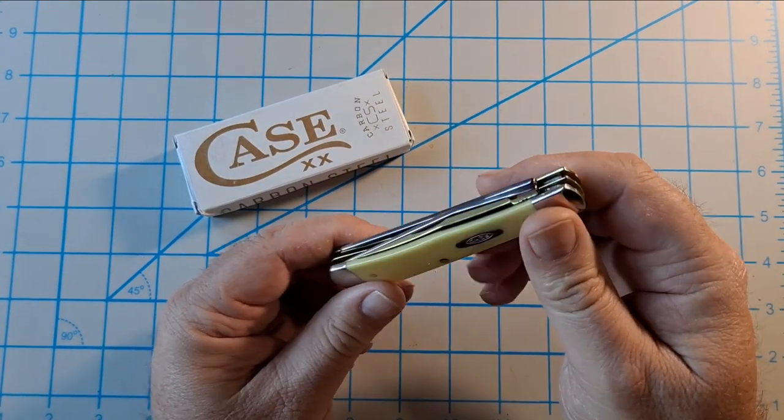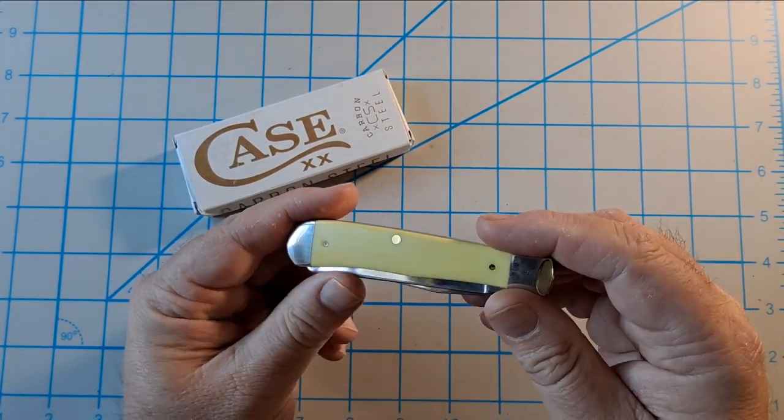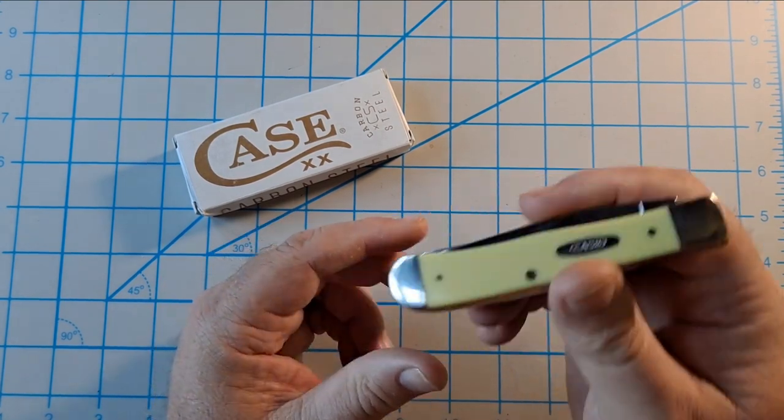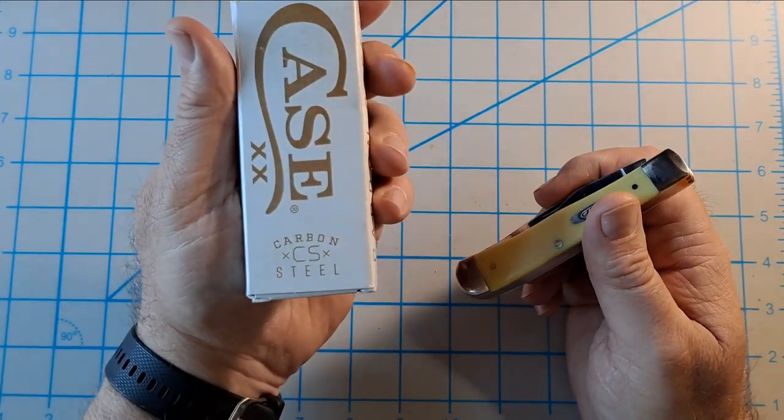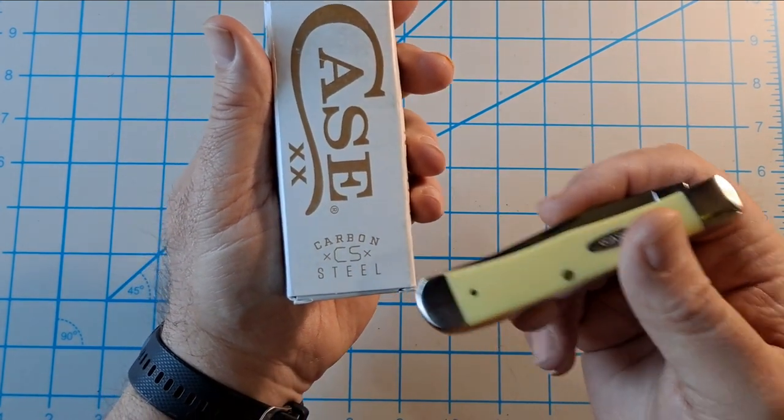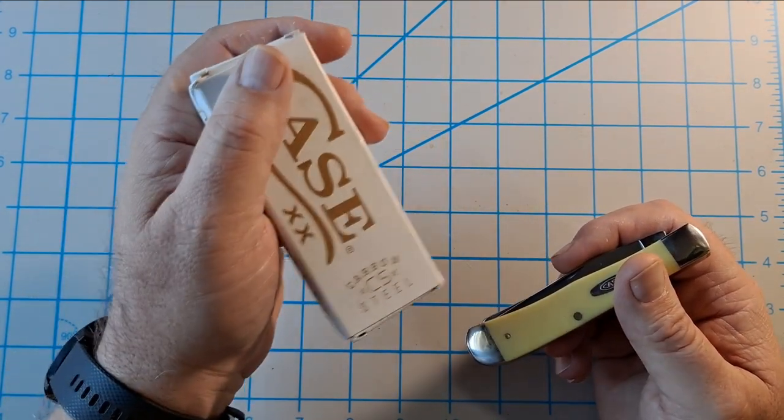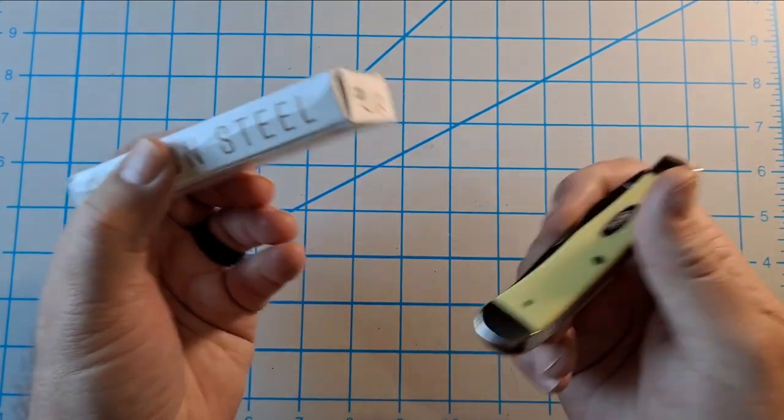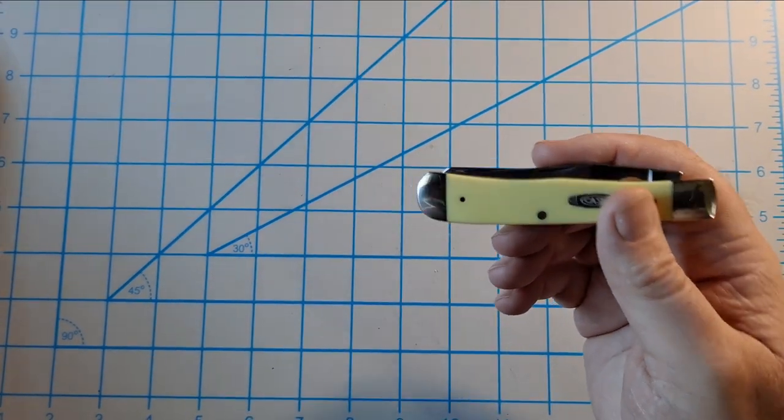But anyways, I just got this, and it's pretty cool. It's the synthetic yellow trapper and carbon steel. If you see the unboxing video, I wanted the CV steel, not the carbon. But anyways, it works for me.